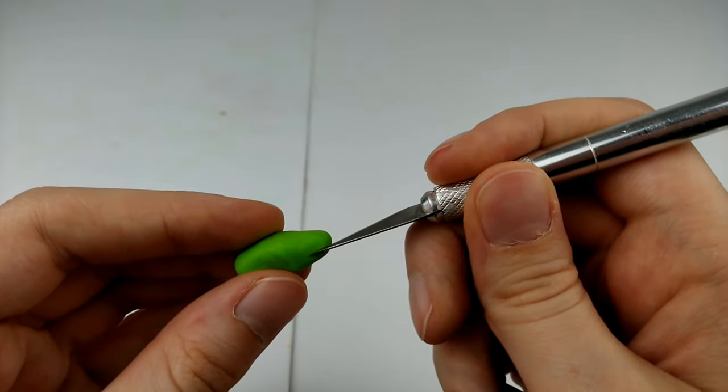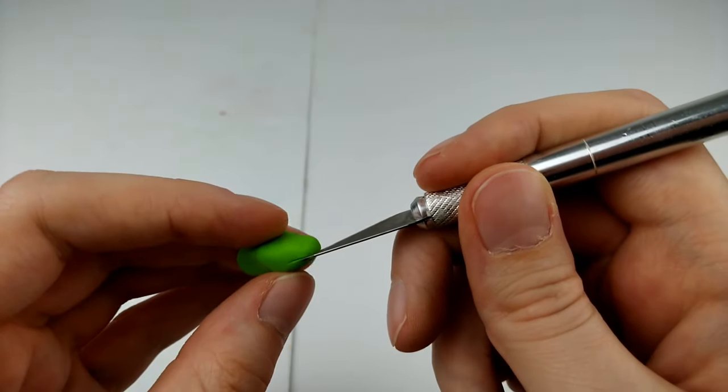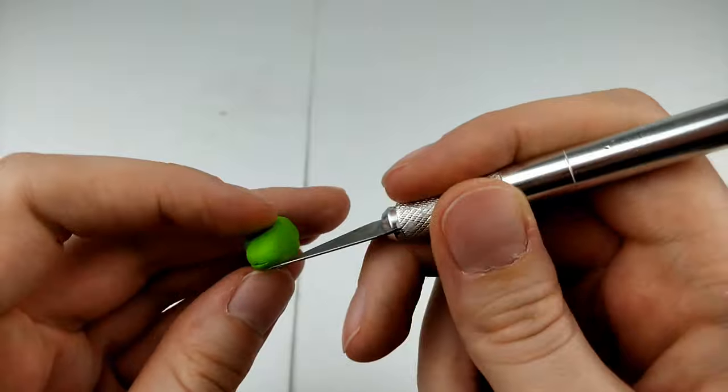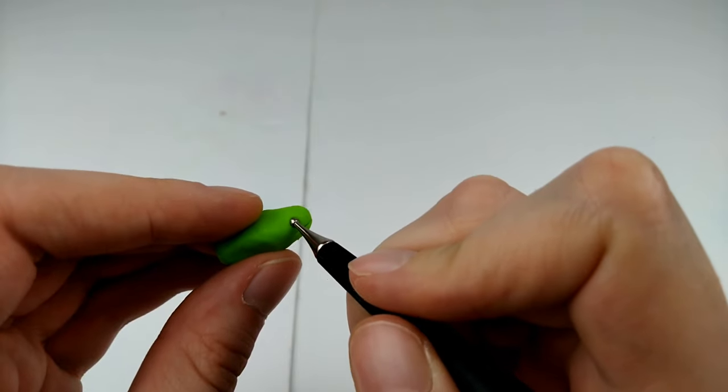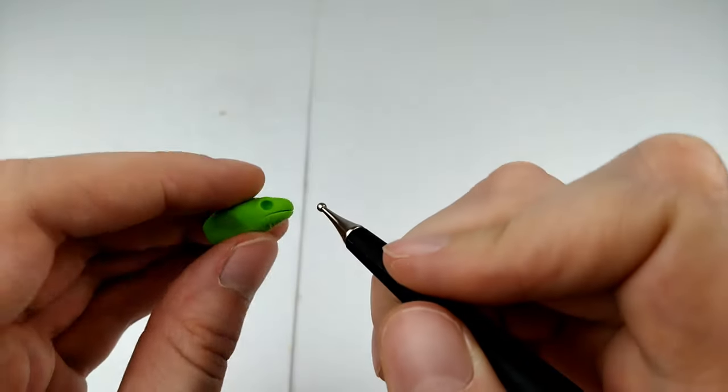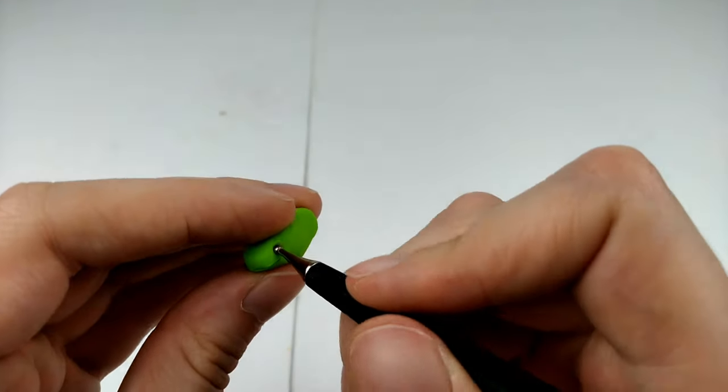So I'm just taking my sculpting knife and drawing a line for the mouth. Then I'm using one of my sculpting tools to create indents for the eye sockets. And now for the legs.